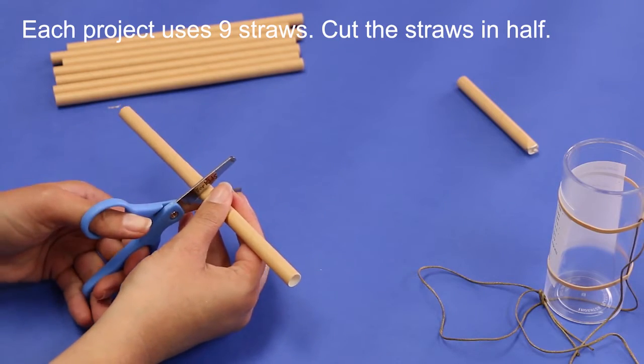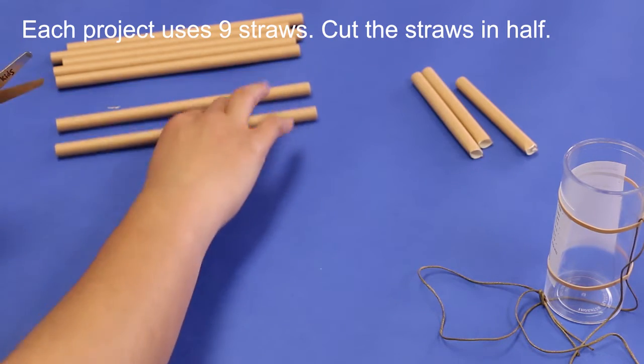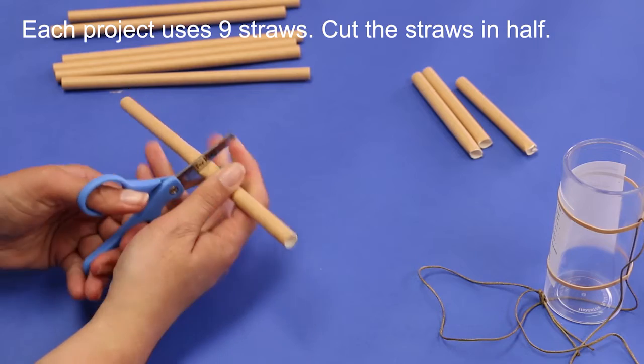The next step is to cut all of the brown straws in half. Each project requires nine straws. When cut, there will be 18 pieces.